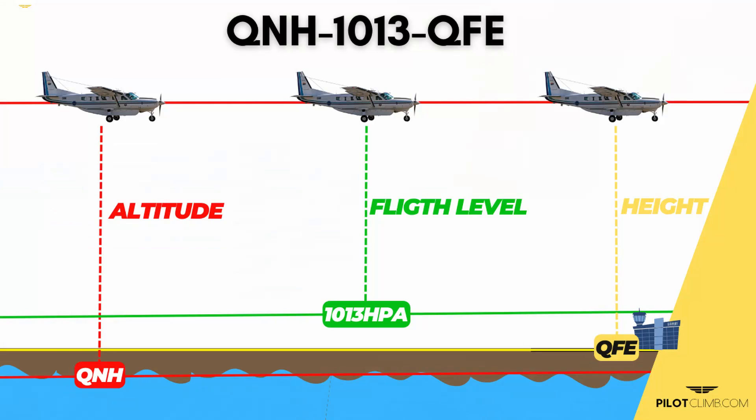The second pressure reference is the QFE — Quebec Foxtrot Echo — which is the pressure reference of a specific aerodrome, a specific field. A quick way to remember the QFE is to associate the F with 'field.' The QFE is a pressure reference usually used for an airfield. If you want to know the difference in feet between that specific aerodrome and your aircraft, you need to set the QFE. I've been flying for around 20 years and I've never used the QFE. However, if you want to fly flight height — not altitude, but height — you need to set the QFE in the altimeter.